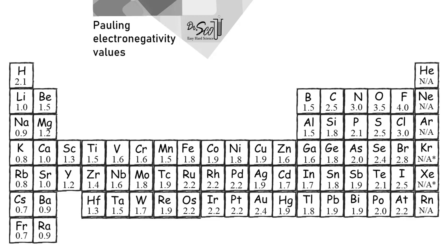Seeing that picture probably makes sense why there is something in between a pure covalent bond — where electrons are shared equally — and something that is not an ionic bond, but where there is a polarization to that bond: a difference in the electron cloud around one atom versus another.